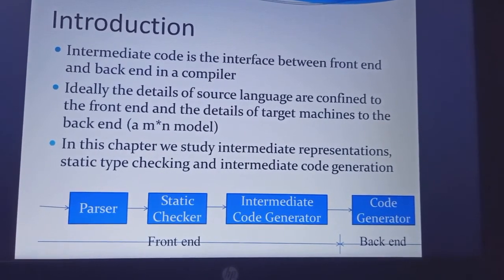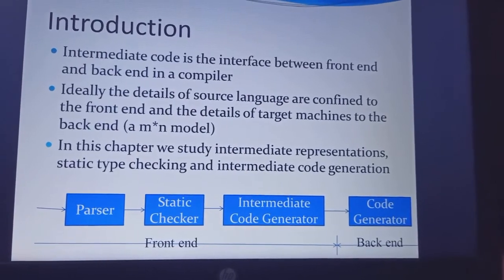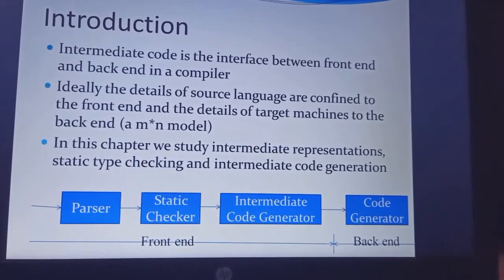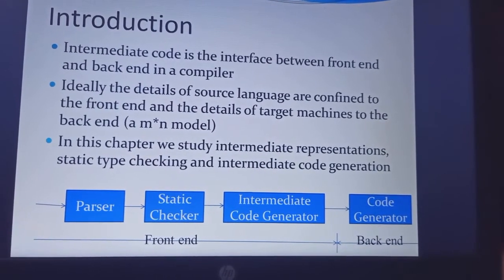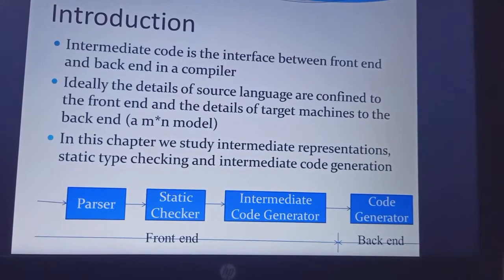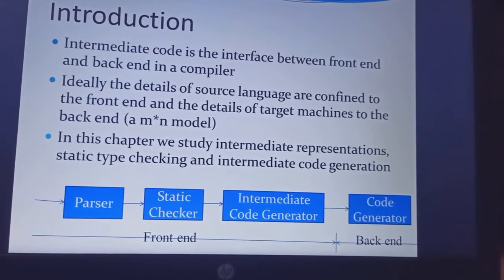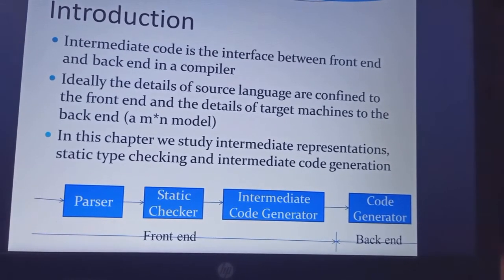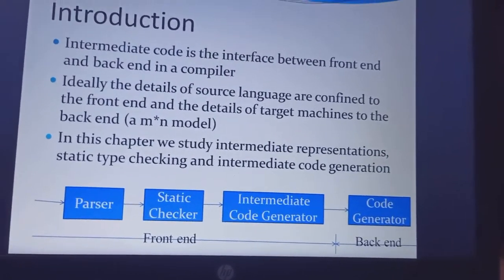In the intermediate code generator, we generate a 3-address code. That code is then passed to the code optimization phase, which is optional. After code optimization, we proceed to the code generator.